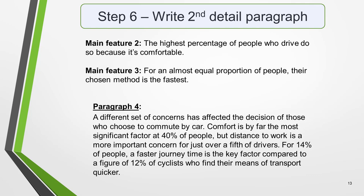For the fourth and final paragraph, you do the same thing for your second key feature. I've added the third main feature again, as it will round off the essay well. In an exam situation, I would include it if I had time. Main feature 2, as a reminder, is the highest percentage of people who drive do so because it's comfortable. And main feature 3, for an almost equal proportion of people, their chosen method is the fastest. And here's an example of what you could write. A different set of concerns has affected the decision of those who choose to commute by car. Comfort is by far the most significant factor at 40% of people. But distance to work is a more important concern for just over a fifth of drivers. For 14% of people, a faster journey time is the key factor, compared to a figure of 12% for cyclists who find their means of transport quicker.